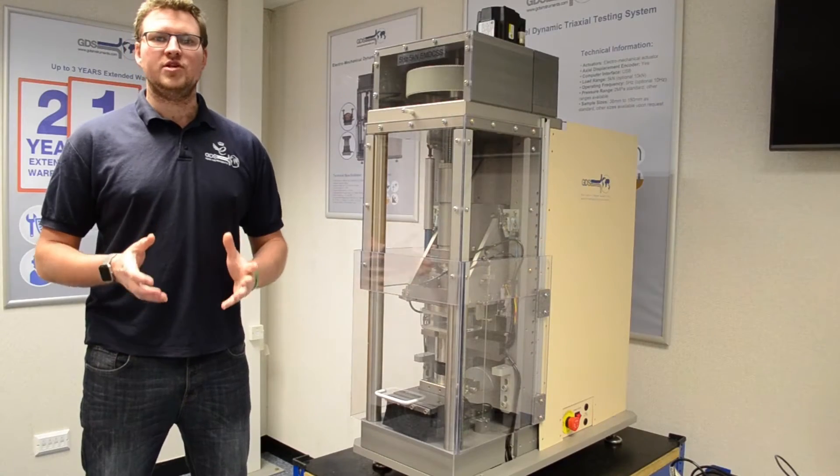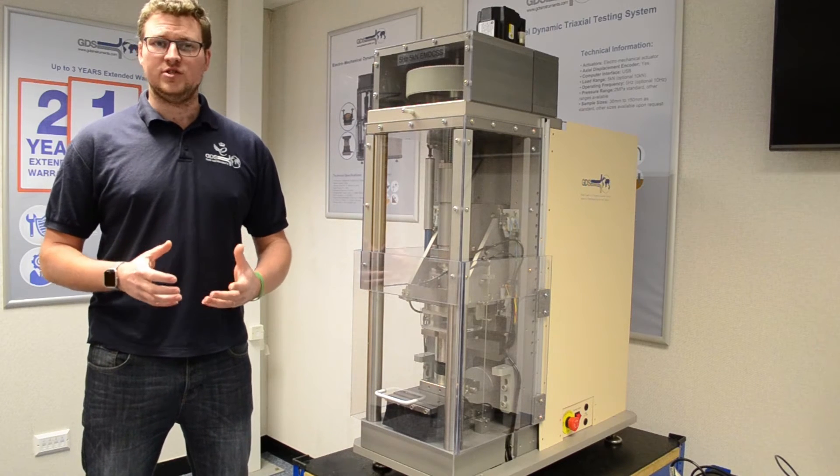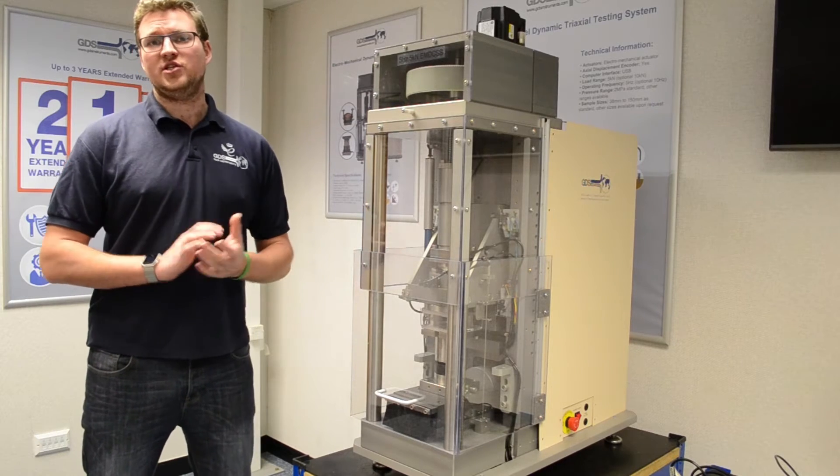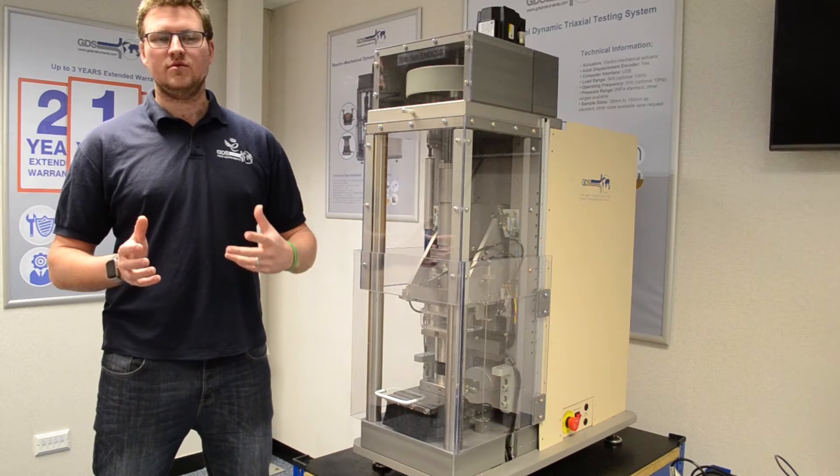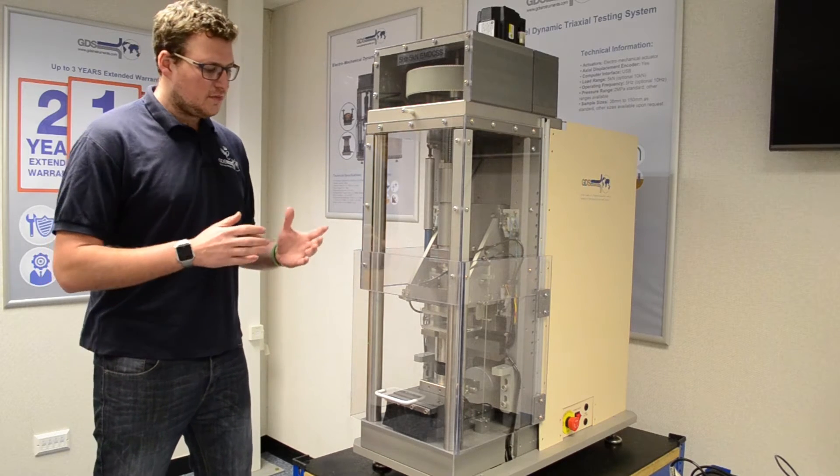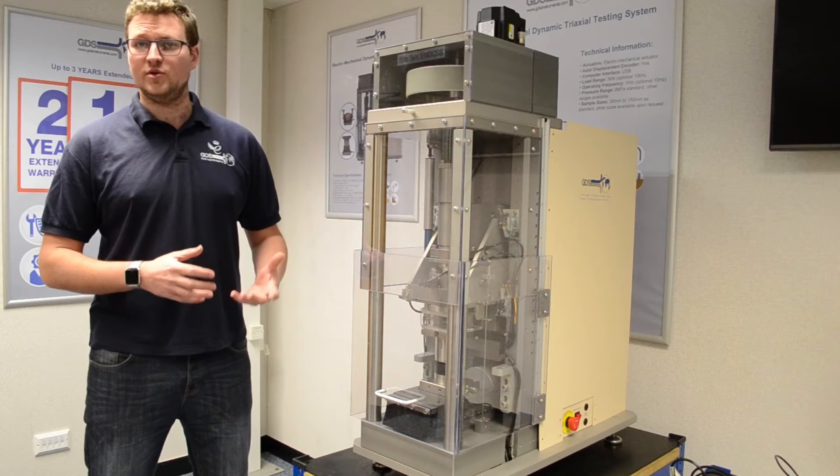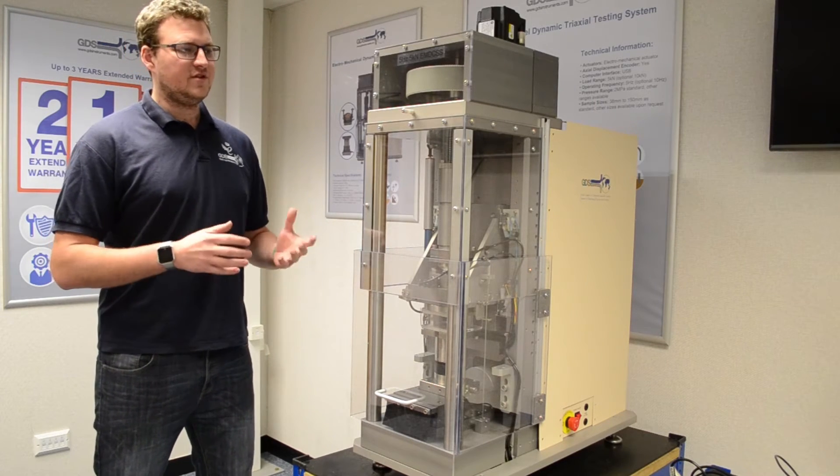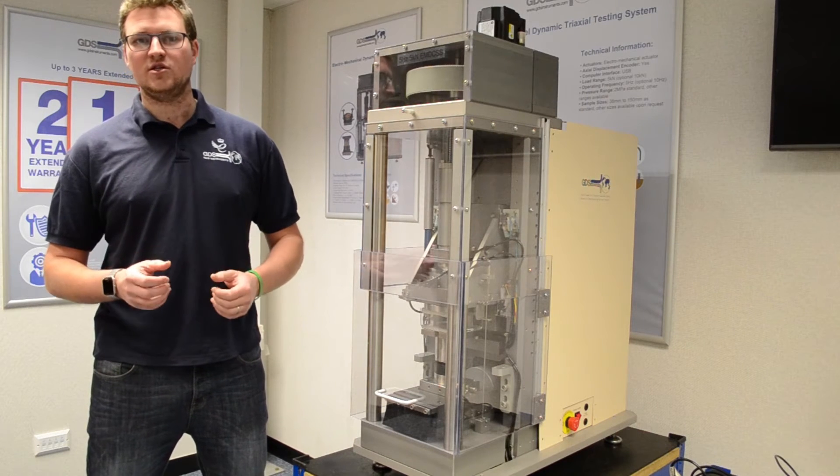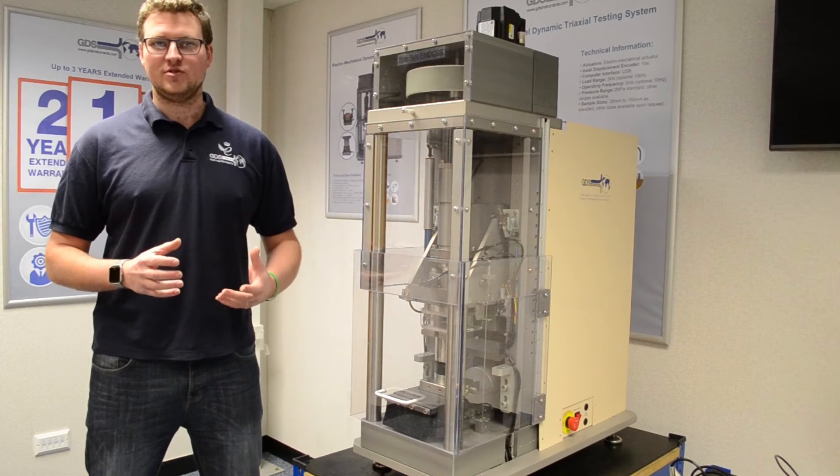One of the most important designs and features about this piece of equipment is the overall stiffness of the system. You may hear people refer to things such as system compliance and why that is quite important within your testing. Because we're trying to measure such small strains while testing samples within this machine, if the system isn't stiff enough and it starts to bend and flex and twist, we could end up measuring those system compliances within our test results, effectively ruining the results of which we're trying to achieve.